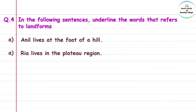Question 4: In the following sentences, underline the words that refer to landforms. The first sentence contains the landform 'hill.' Riyan lives in the plain region — the landform here is 'plain.'